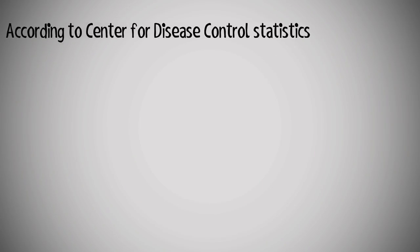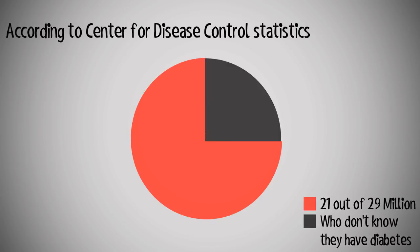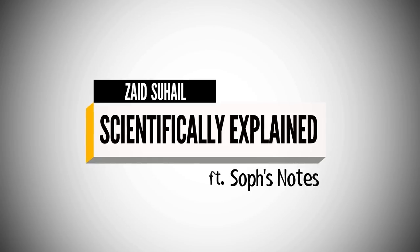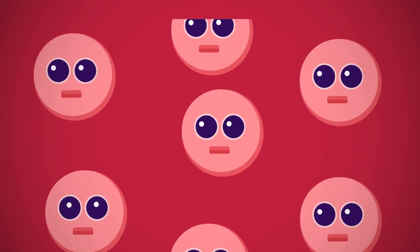According to CDC statistics, only 21 million out of 29 million diabetic patients have actually been diagnosed, which means over one quarter of Americans don't even know they have diabetes. That's what makes our discussion very important. So what is diabetes? Welcome to the biological episode of Scientifically Explained.